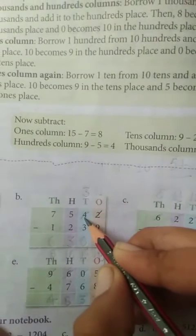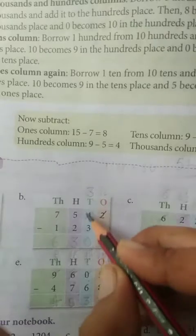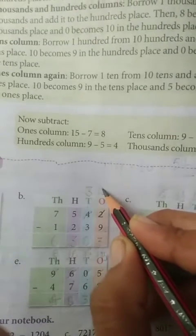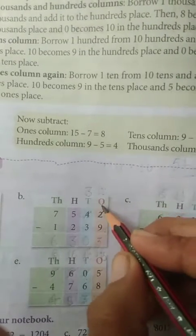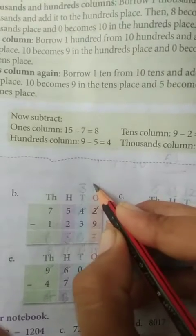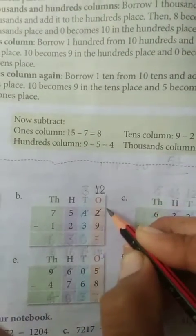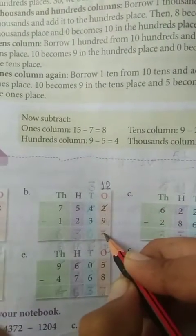1's place. जब हम बोरो लेते हैं, तो यहाँ यह 10's place से लिया है, तो यहाँ पर कितना हो जाएगा? 10 plus 2. 1 10 लिया है, तो 10 plus 2, 12. So 12 minus 9, 3.